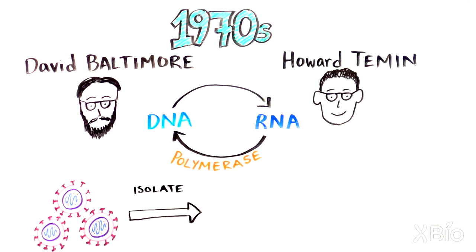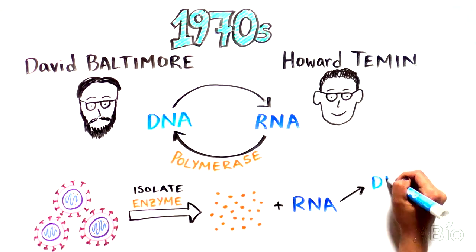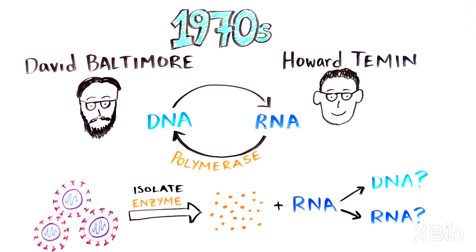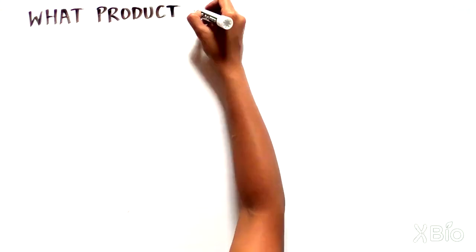First, the scientists isolated a candidate enzyme that could use an RNA template and make a product. But what was the product? Was it copies of DNA or of RNA? To answer this question...